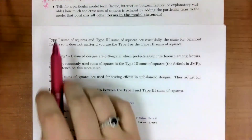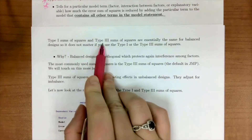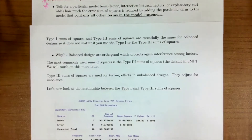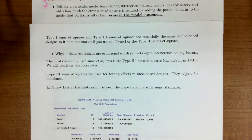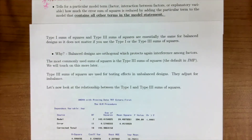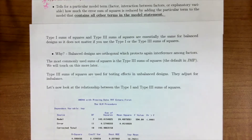Type one and type three sums of squares are essentially the same for a balanced design, so it doesn't matter which one you use — balanced designs are orthogonal, which protects us from interference among factors. In JMP, the software will automatically default to type three sums of squares. Type three sums of squares are used for testing effects in unbalanced designs, adjusting for the imbalance.